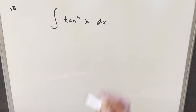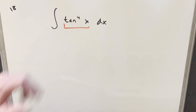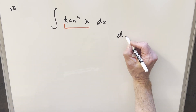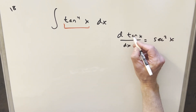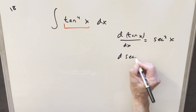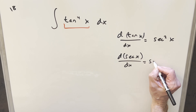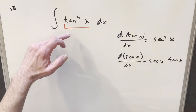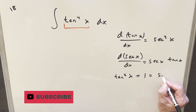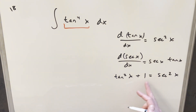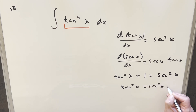What we always want to do is break this up and get some secants in there. If we can get a secant squared in the expression, then maybe we can do a u-substitution. The derivative of tan x is secant squared x, and the derivative of secant x is secant x times tan x. We'll use the identity tan squared x plus 1 equals secant squared x, which lets us write tan squared x as secant squared x minus 1.